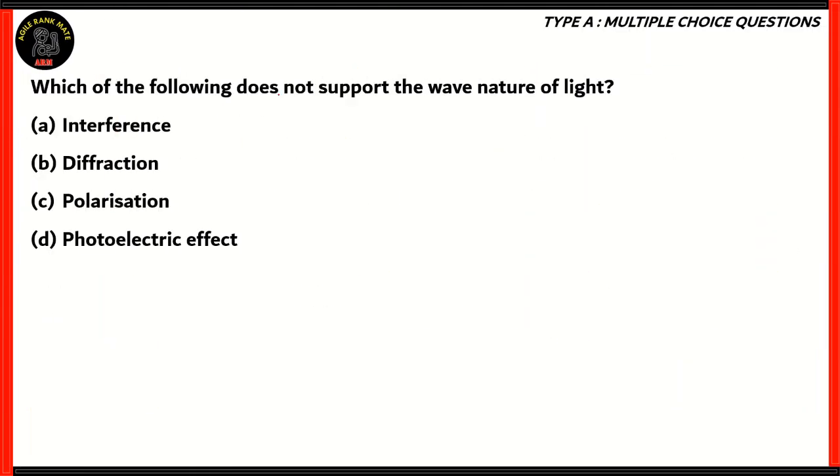Now let's look at another question. Which of the following does not support the wave nature of light? So we have some phenomena corresponding with light. One of these is explained by the particle nature and not by the wave nature. We need to find out which one. So we have interference, diffraction, polarization, photoelectric effect.